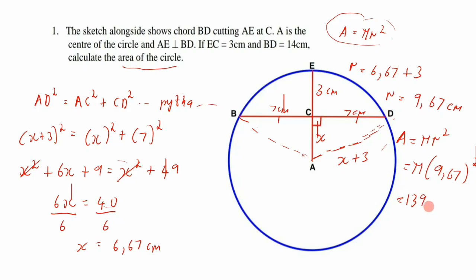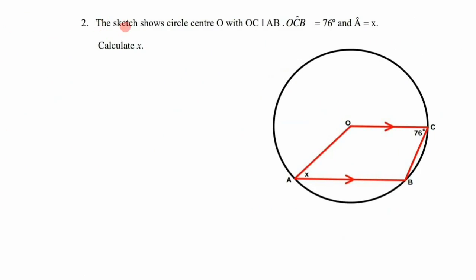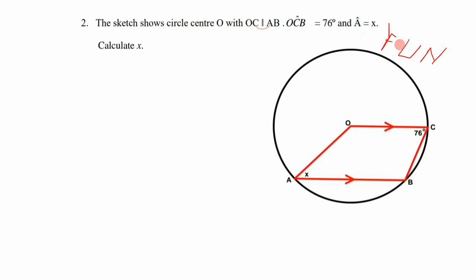Question 2: The sketch shows circle with center O, with OC parallel to AB, angle OCB = 76°, and angle A = x. Calculate the value of x. Since we have parallel lines, we associate them with co-interior angles, corresponding angles, or alternate angles.